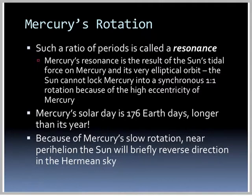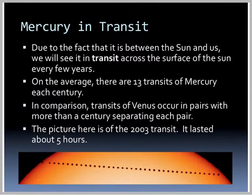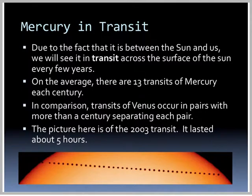Because of Mercury's slow rotation near perihelion, the Sun will briefly reverse direction in the Mercurian sky. Mercury is between us and the Sun, so we see it transit across the surface of the Sun every few years. On average, there are 13 transits of Mercury each century. This picture shows many images taken on a time delay as Mercury crosses the surface of the Sun.